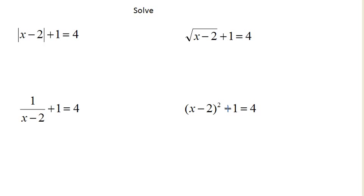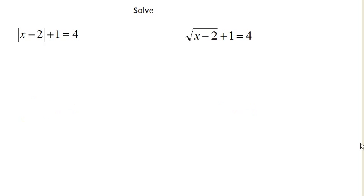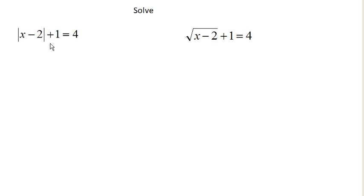We have four somewhat similar looking problems here that we're going to try to work through. I'm going to just start with these two here. I've got absolute value of the quantity x minus 2, plus 1, equals 4. The very first thing I'm going to want to do is isolate that absolute value — just like solving x plus 1 equals 4, I subtract 1 from both sides and get absolute value of x minus 2 equals 3.